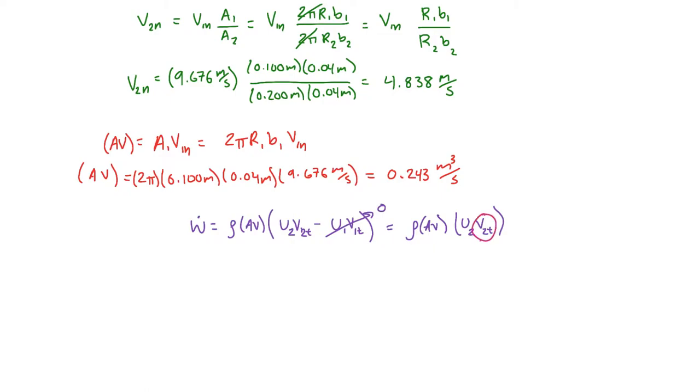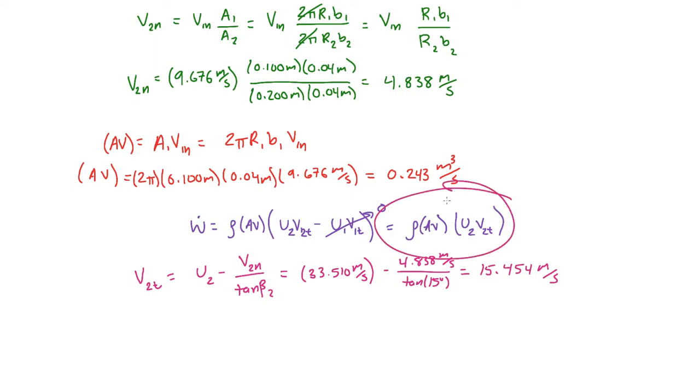I forgot to actually define another velocity. That is the tangential velocity at 2. But we have the normal velocity at 2. So we should be able to find that quite easily. The tangential velocity at 2 is simply u2 minus v2 normal over the tangent of beta 2. That ends up being 15.454 meters per second. So now we have everything for this equation to find the power of the pump.